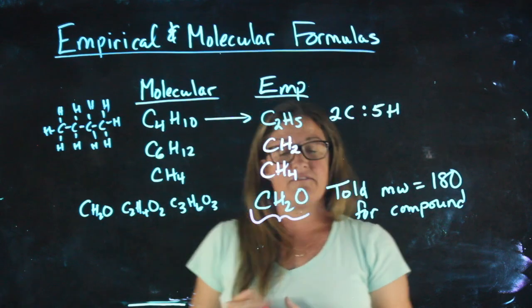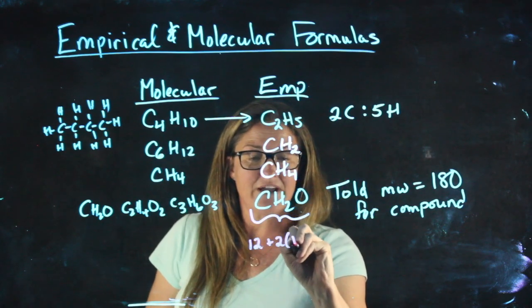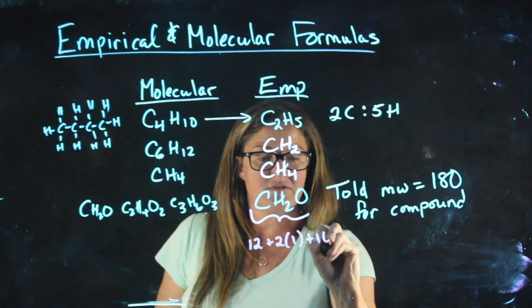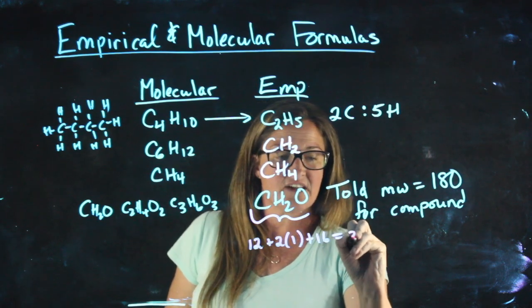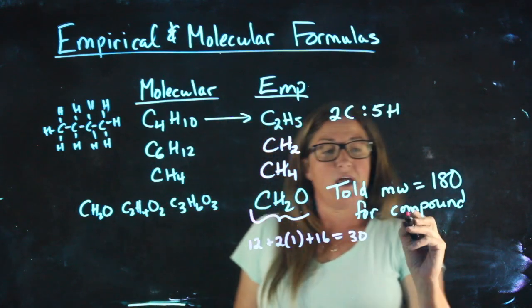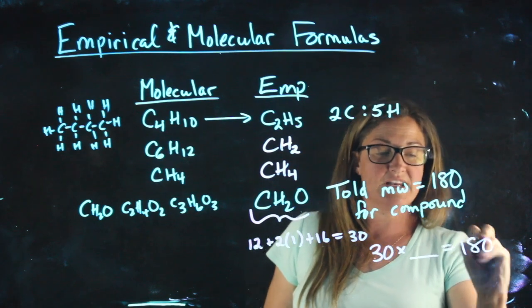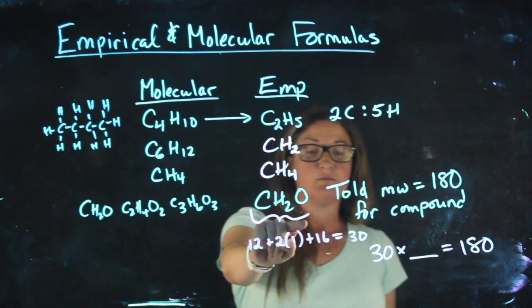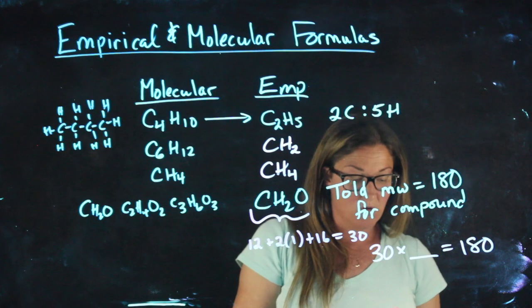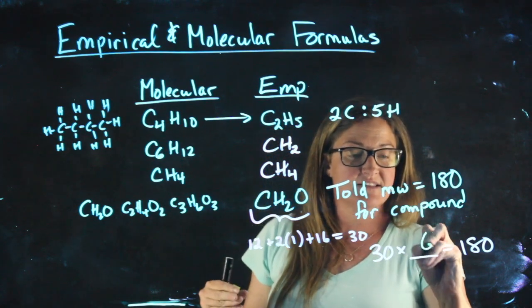We get the molecular weight of the empirical. Carbon, two hydrogens, plus one oxygen, gives us a total of 30. Then what I want to see is 30 times what number will give me 180, meaning what do I have to multiply this by to get to my goal? Well, 30 goes into 180, 6 times.